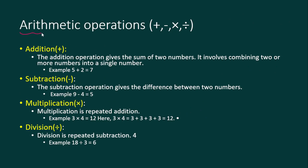Now let's move toward arithmetic operations. We know about numbers, and there are several basic operations we can perform. Addition: five plus two is seven, two plus two is four. Subtraction: nine minus four is five, four minus three is one.